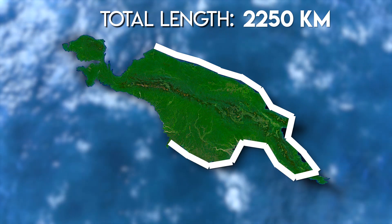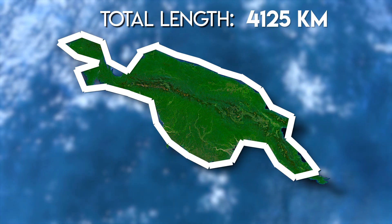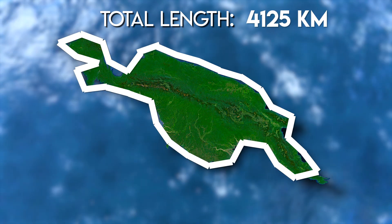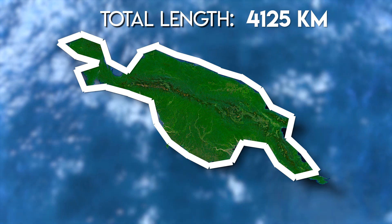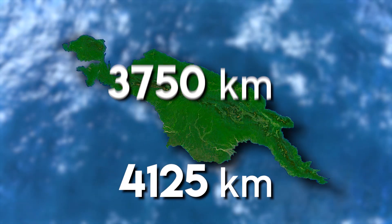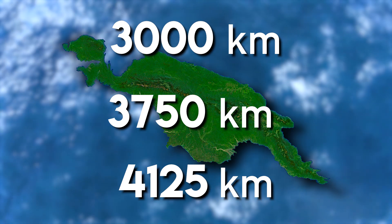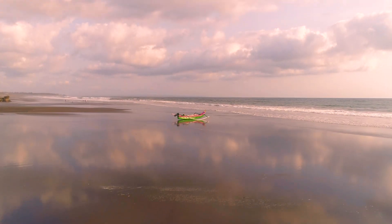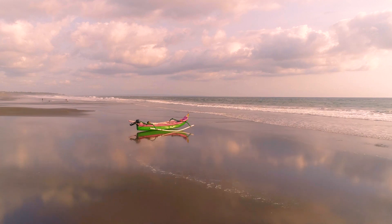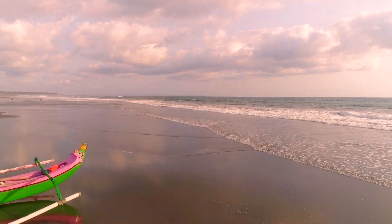Half the unit size again, and we have a coast that's 4,125 kilometers long — and yet we're still nowhere close to a perfectly accurate measurement. I hope you're noticing the trend by now. With each smaller unit of measurement, the larger our measurement becomes. This happens because the closer you look, the more intricate the coastline becomes, and that increased complexity means more coastline to measure.